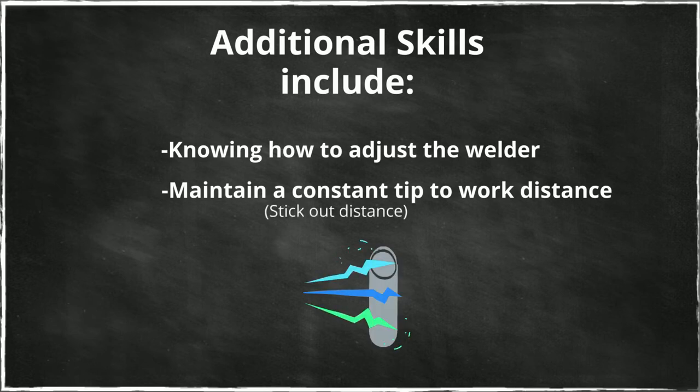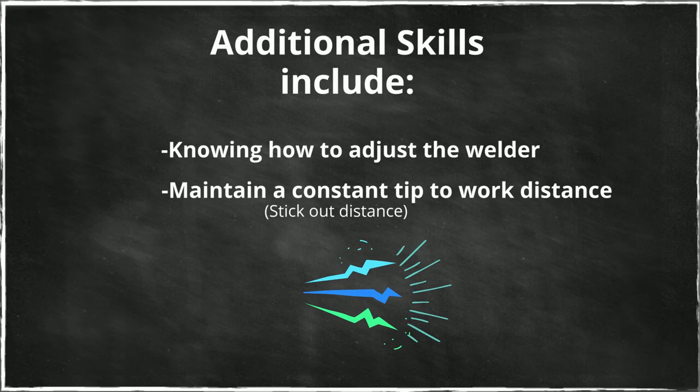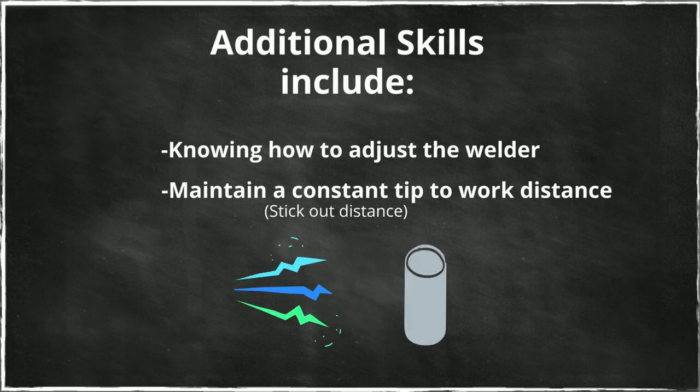Excessive stick out distance may cause the wire to prematurely melt, causing a sputtering arc, and may also cause shielding gas to rapidly disperse, degrading the quality of the weld. In contrast, insufficient stick out may increase the rate at which the spatter builds up inside the gun's nozzle. In extreme cases may cause damage to the gun's contact tip. Stick out distance varies for different GMAW weld processes and material applications.